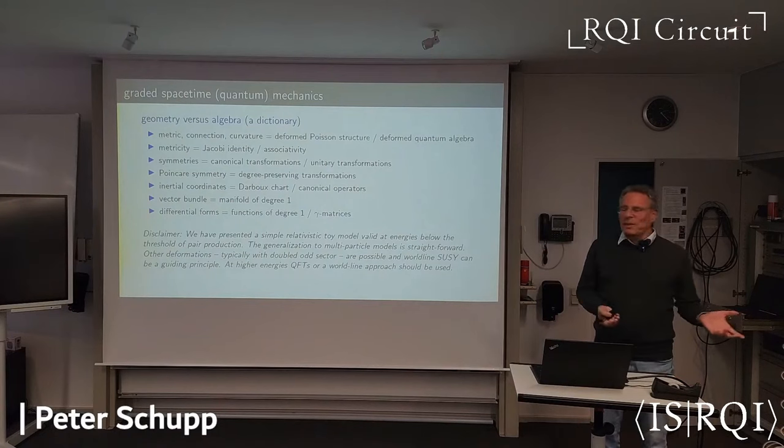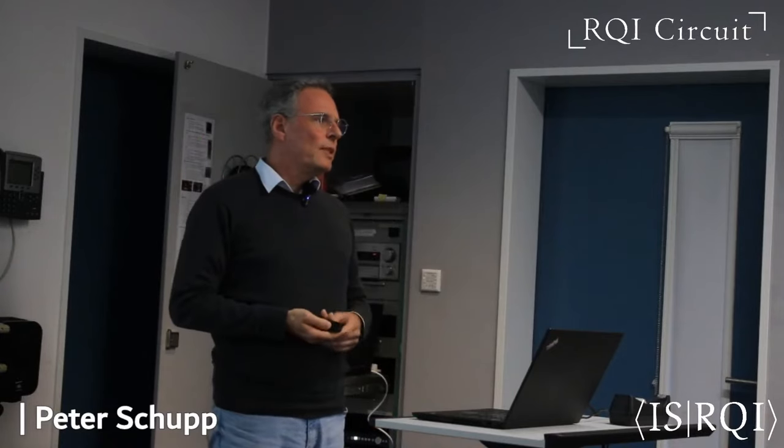I should have a little disclaimer here. This was just a toy model. It was the simplest possible model you could write down. There are other deformations. There are more realistic deformations, usually with double the odd sector. It could be fixed by world-line supersymmetry. And this is all valid at low energies below the pair production threshold. At higher energies, you should use QFT. But I guess in the context of what we want to do here, low energies are fine.